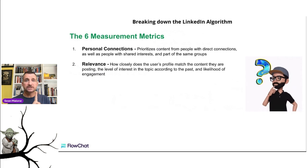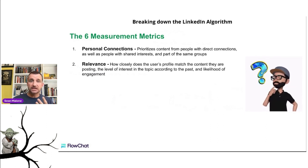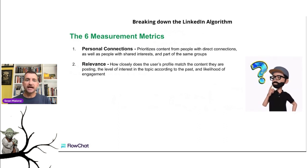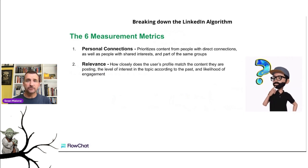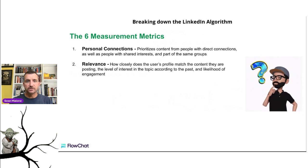Number two is relevance — how closely does the user's profile match the content they are posting? Does your profile, your banner, your headlines, your activity feed, your posting, your articles, your groups — how much relevancy does that have with the content you're actually creating? The algorithm also looks at content you've posted in the past and the level of interest it had. If your post got engagement in the past, it'll probably get engagement in the future, and the algorithm will show it to more people.